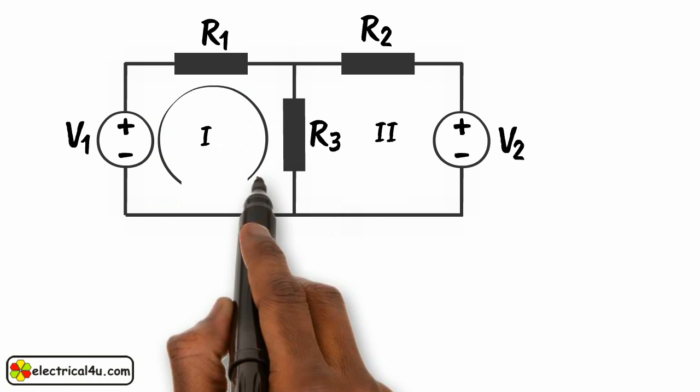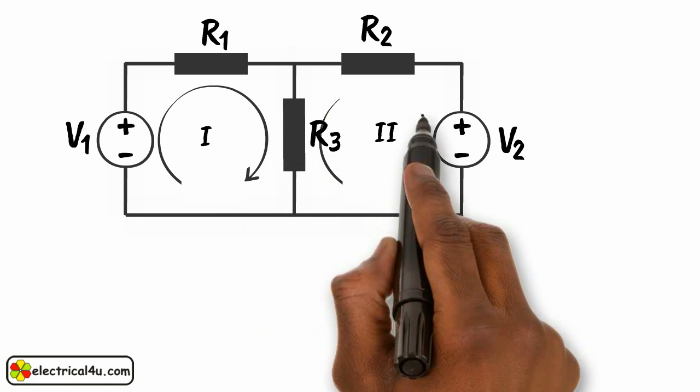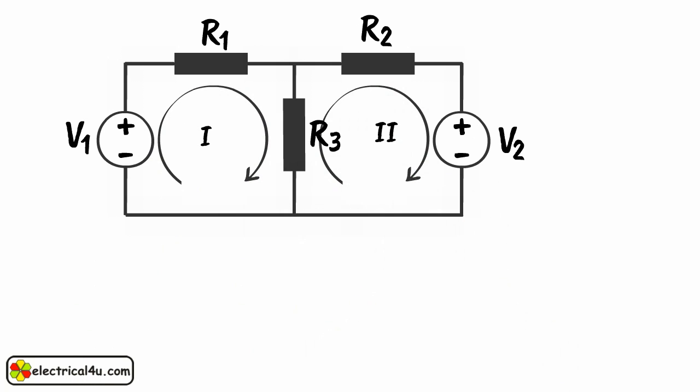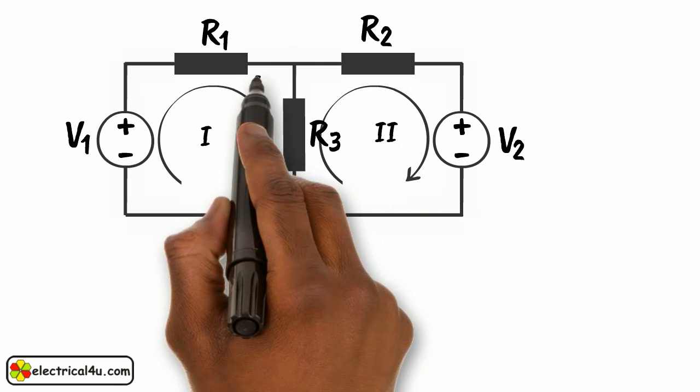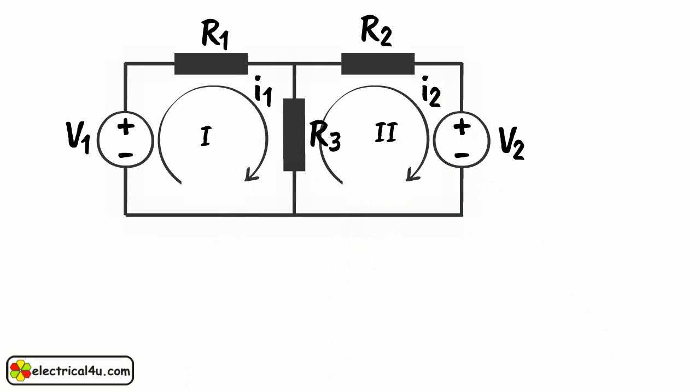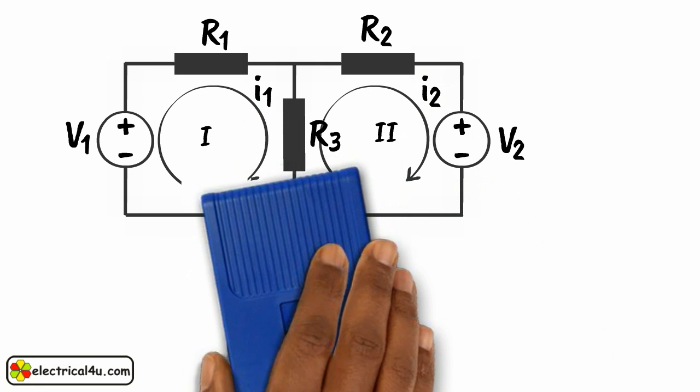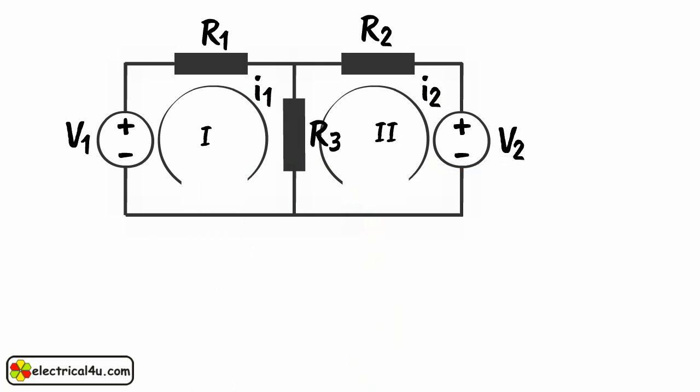In this method, first we have to consider one imaginary loop current for each mesh. These imaginary currents are called mesh currents. Mesh currents are used to calculate actual currents through each branch of the circuit. The direction of the mesh currents can be taken in any direction, clockwise or anti-clockwise.